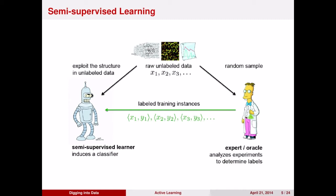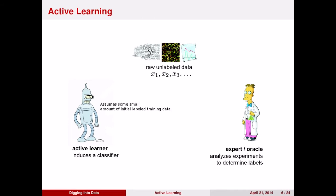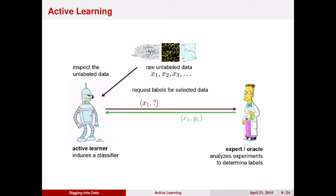What active learning is, in contrast, is again you have a bunch of unlabeled data. The algorithm inspects the unlabeled data, and then it requests which data should be labeled, and then the expert annotates those data, sends it back, the machine learning algorithm updates its model, it then asks for more labels, and the process repeats.